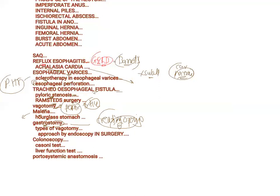Gastrostomy is usually required for CA esophagus when the patient has severe dysphagia and is not able to swallow. We talked about colonoscopy and various GI infection tests. Liver function tests include bilirubin levels, enzyme levels — SGOT, SGPT, transaminases, alkaline phosphatase — as well as serum albumin, coagulation factors, and prothrombin time.